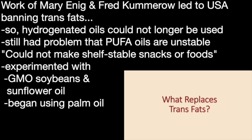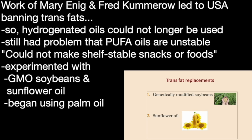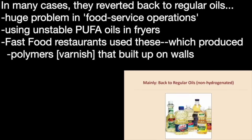What replaced trans fats? You still had the basic problem that oils are unstable — they go rancid and they oxidize. You can't make a shelf-stable product out of them; you can't make cookies if the Oreo filling is greasy and dribbling on the shelf. All of those products had hydrogenated oils. So food industry manufacturers tried using genetically modified soybeans to create oils that produced fewer oxidation-prone fatty acids, started producing more sunflower oil, and began using a lot of palm oil because it's high in saturates, and to some extent coconut oil. But in many cases they just reverted back to using regular old oils.